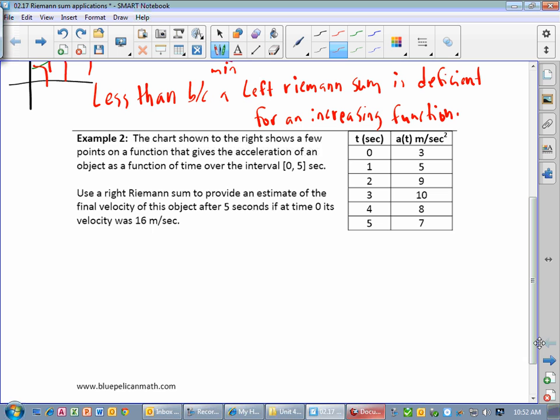The chart shown to the right shows a few points on a function that gives the acceleration of an object as a function of time over the interval from 0 to 5. It says use a right Riemann sum to provide an estimate of the final velocity of this object after 5 seconds, if at time t equals 0, its velocity was 16 meters per second. So we are going to estimate the final velocity. Now notice, we're given acceleration. We're given the rate of change of velocity.